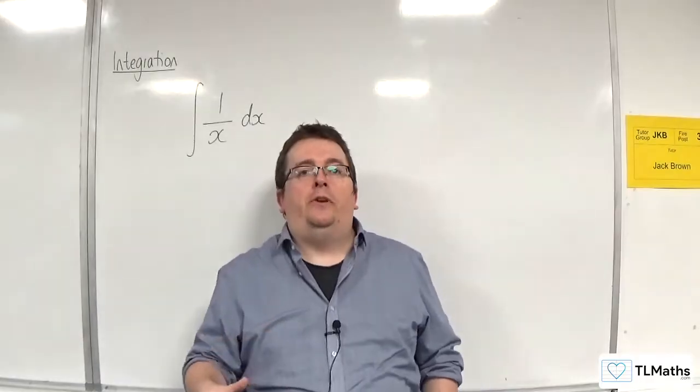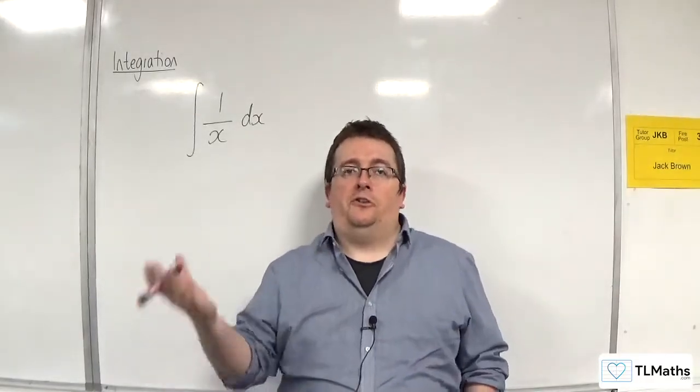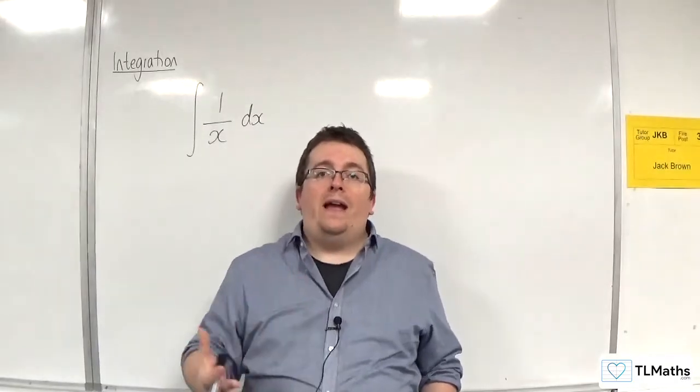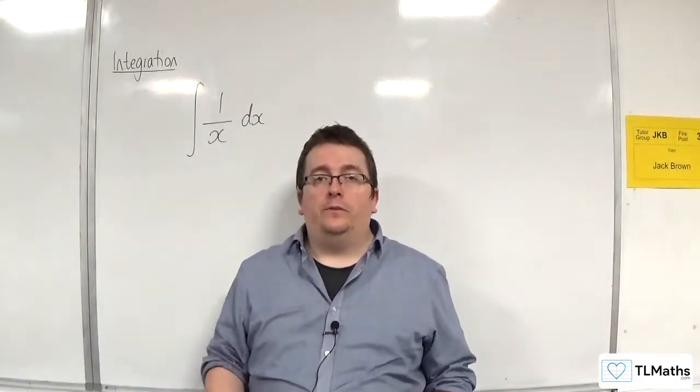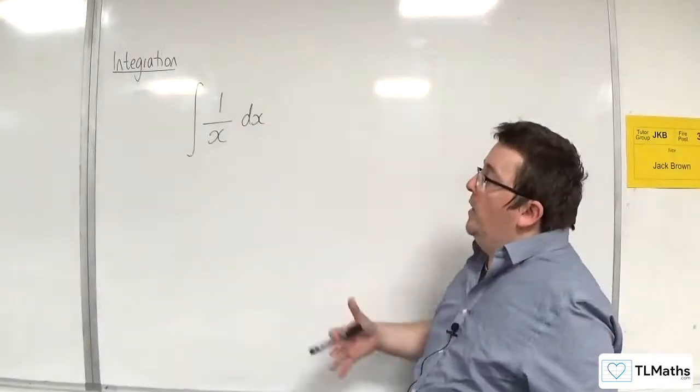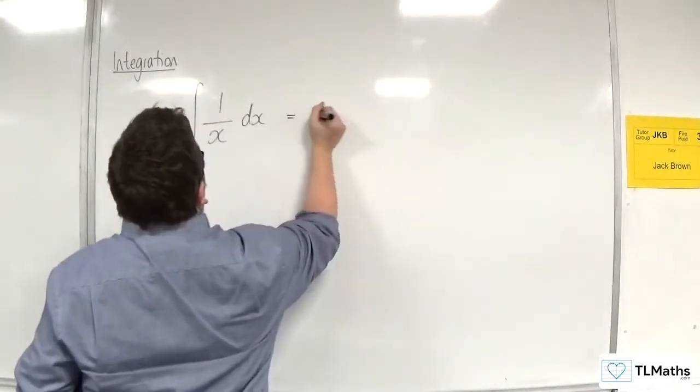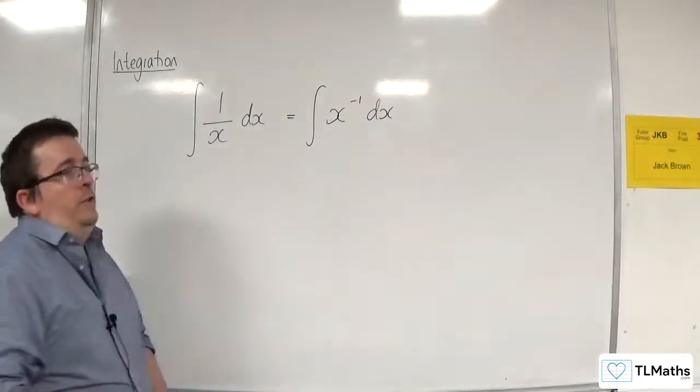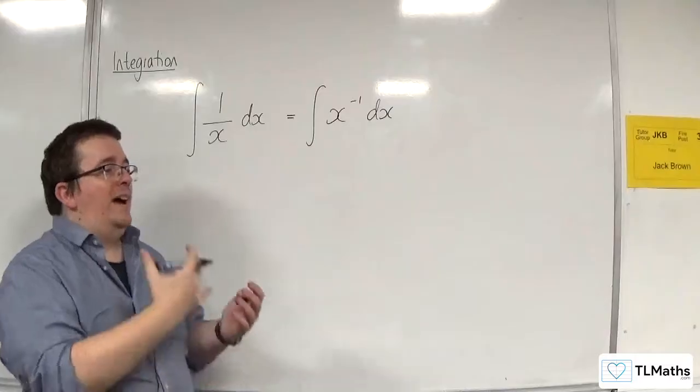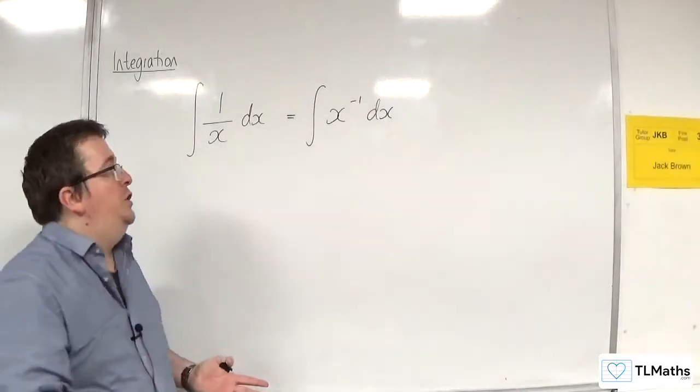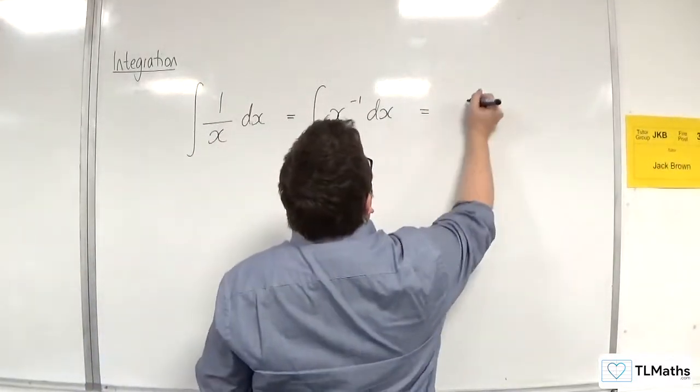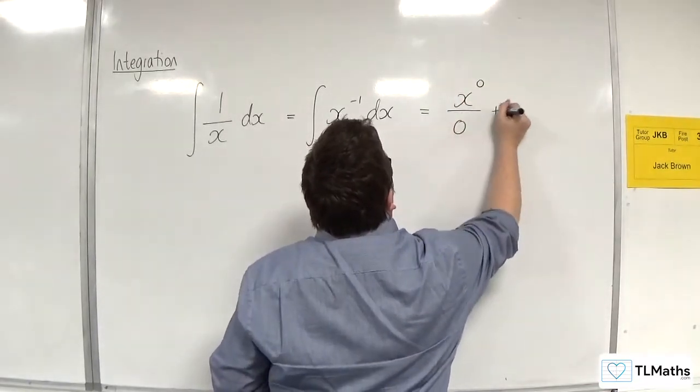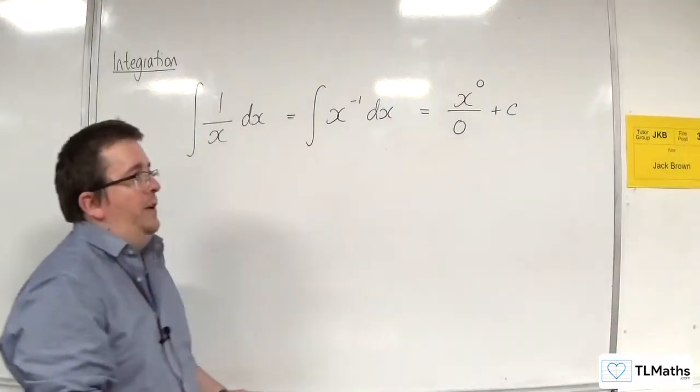So when you're first introduced to integrating x to the power of n, you come across one example where the formula fails, where that method fails. And that is when you have the integral of x to the power of minus 1. Because if you follow the formula through of adding 1 to the power and dividing by the new power, what you end up with is x to the 0 over 0, plus some constant c, of course.